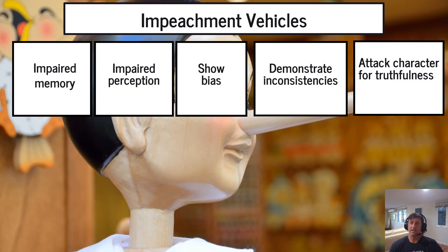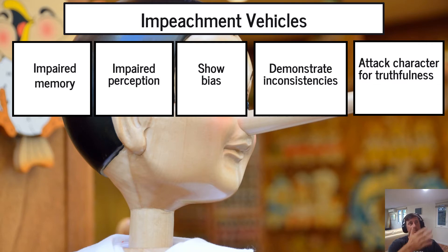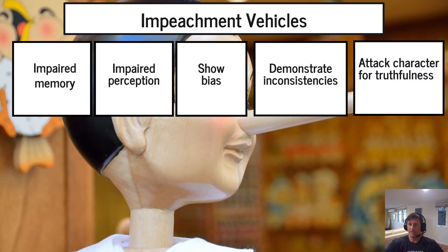Bias is one of the acceptable pathways — one of the acceptable vehicles — to go after credibility. You see it with expert witnesses in mock trial: 'How many times do you testify only for plaintiffs? How much are you paid for this?' That goes to bias. They may have good answers about their memory, perception, or bias, but you can ask. If the other side objects — saying objection improper impeachment — as the proponent you disengage, turn to the court, and say: 'This goes to bias,' or 'This goes to perception,' or 'This goes to memory.'